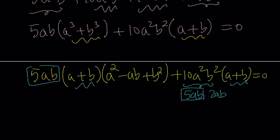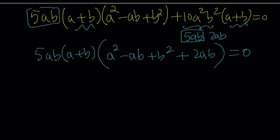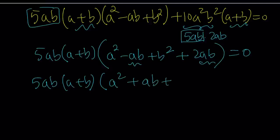Now if we open up another parentheses, the stuff inside the parentheses is going to be a squared minus ab plus b squared plus 2ab. So these are the factors, but let's simplify the third one. 5ab, a plus b. I can combine like terms: negative ab and 2ab make 1ab. So a squared plus ab plus b squared equals zero. Great. So our expression was completely factored.